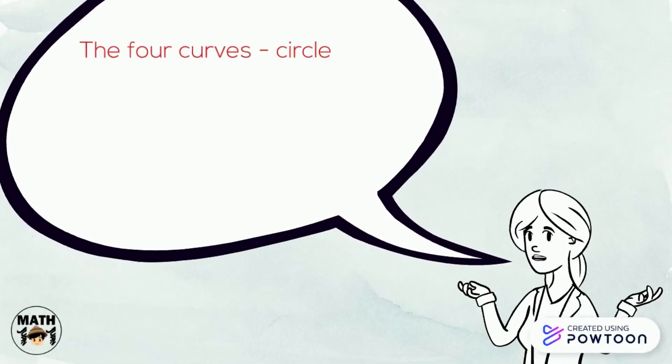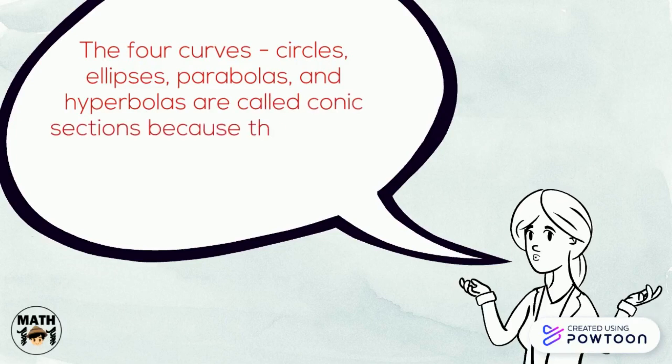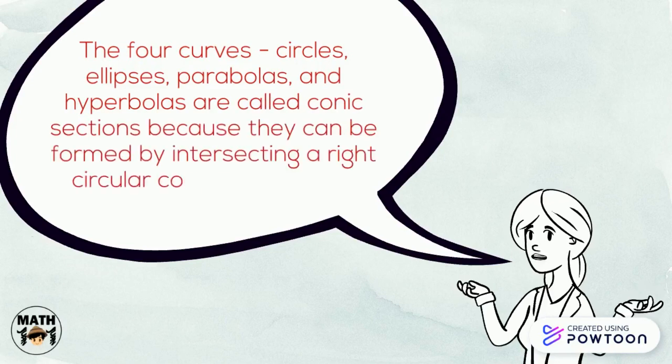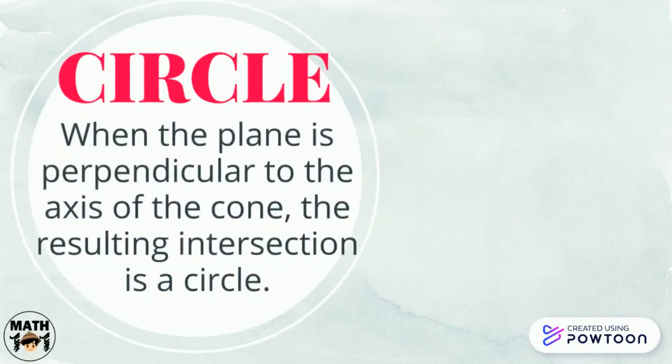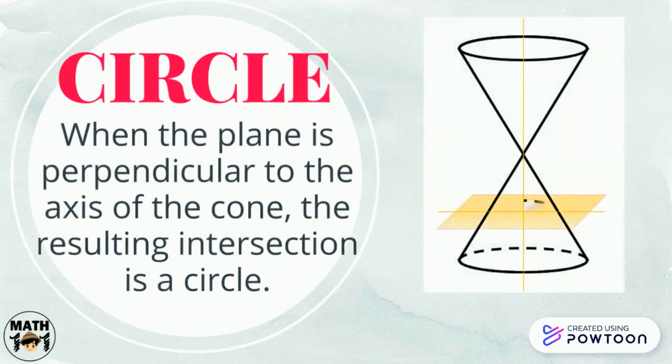If we have a right cone and we pass a plane through it, we can form a conic section. If the plane is perpendicular to the axis of the cone, we can form a circle.